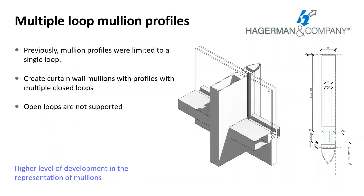Curtain wall mullions now use profiles with multiple loops. For example, they can use profiles with voids inside, which will show a lot more detail than just the outer faces. This leads to a lot more model accuracy, so it is very nice to have that option if you need it.